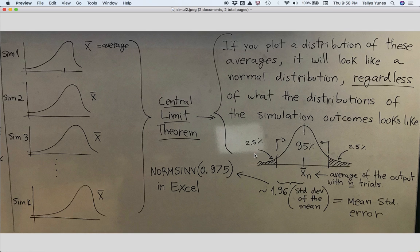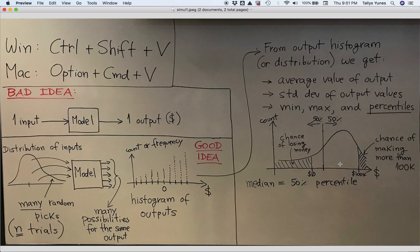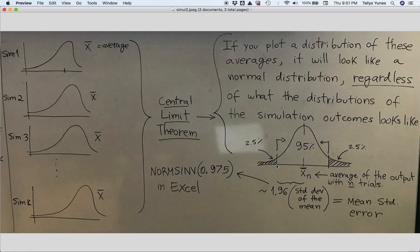And if I create several of those histograms, because I ran my simulation several times, I will have several average values. If I take those guys and make a histogram of them, that's the whole point of the central limit theorem. A histogram of averages of these simulation outruns will indeed have a bell shape form. It will approach a normal distribution, even if the histogram of each individual simulation run does not.